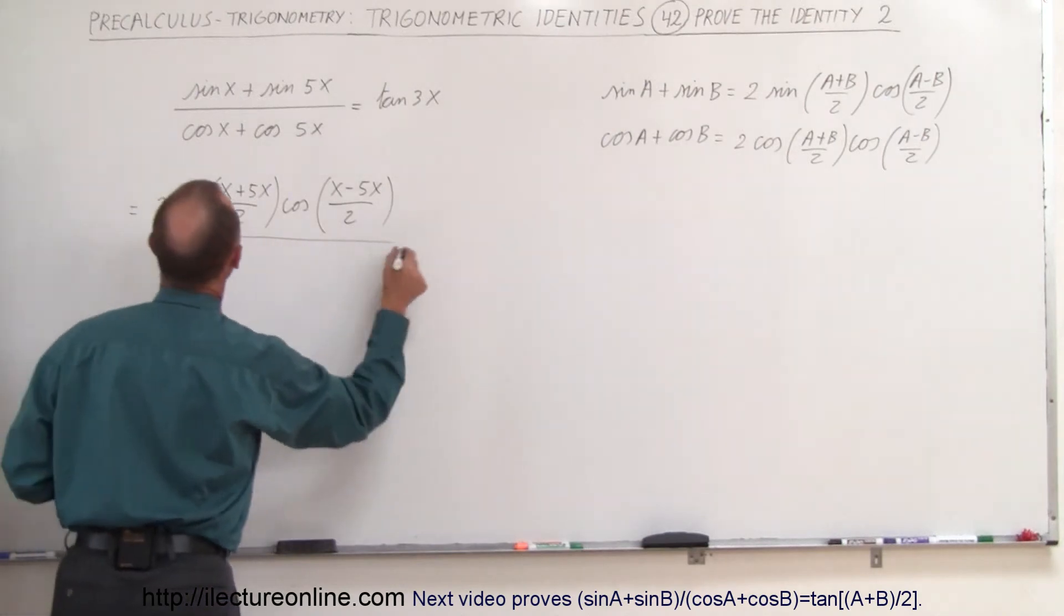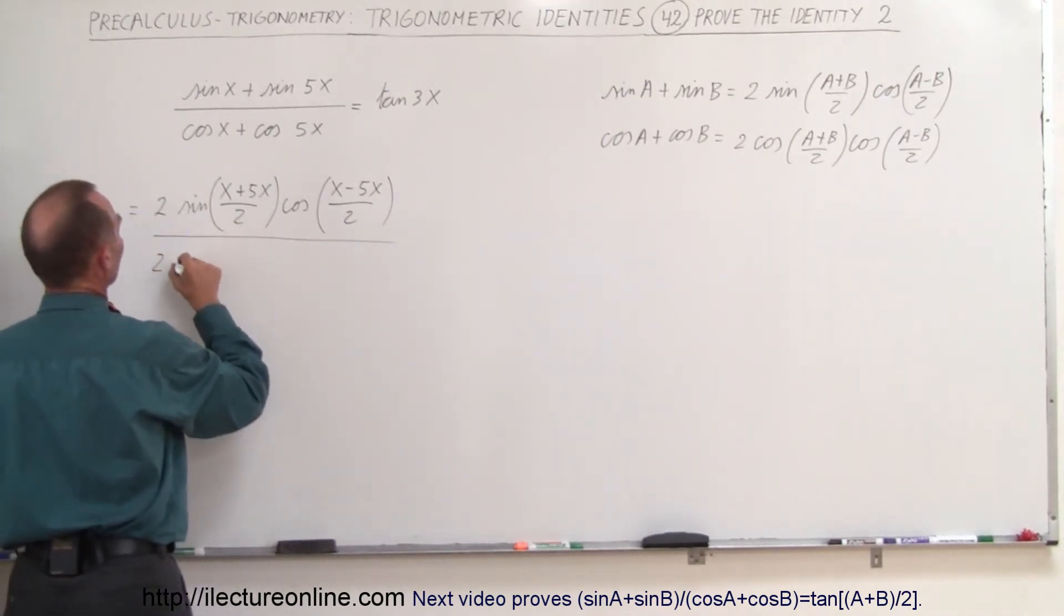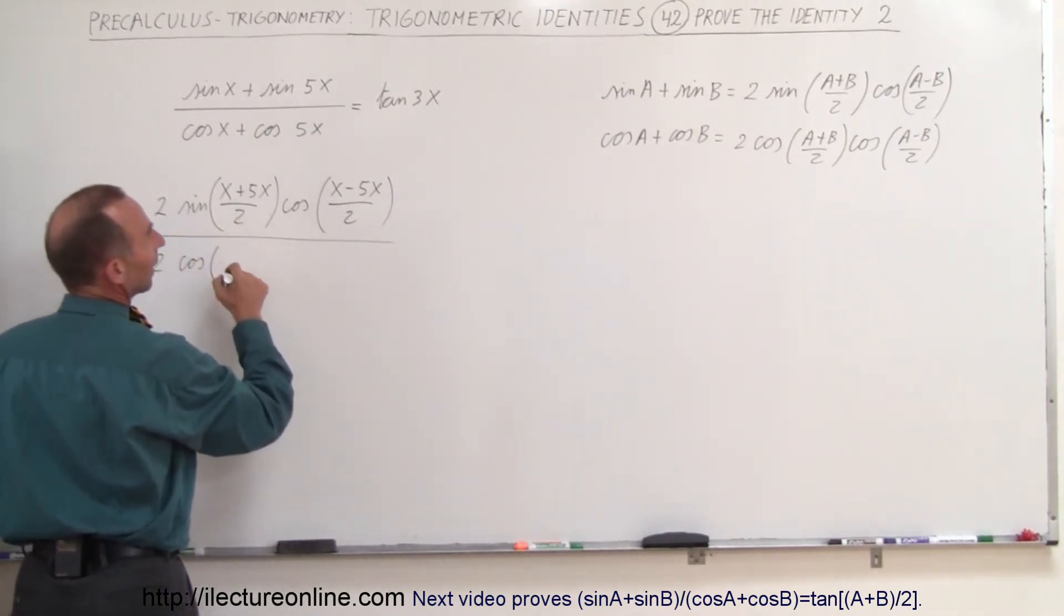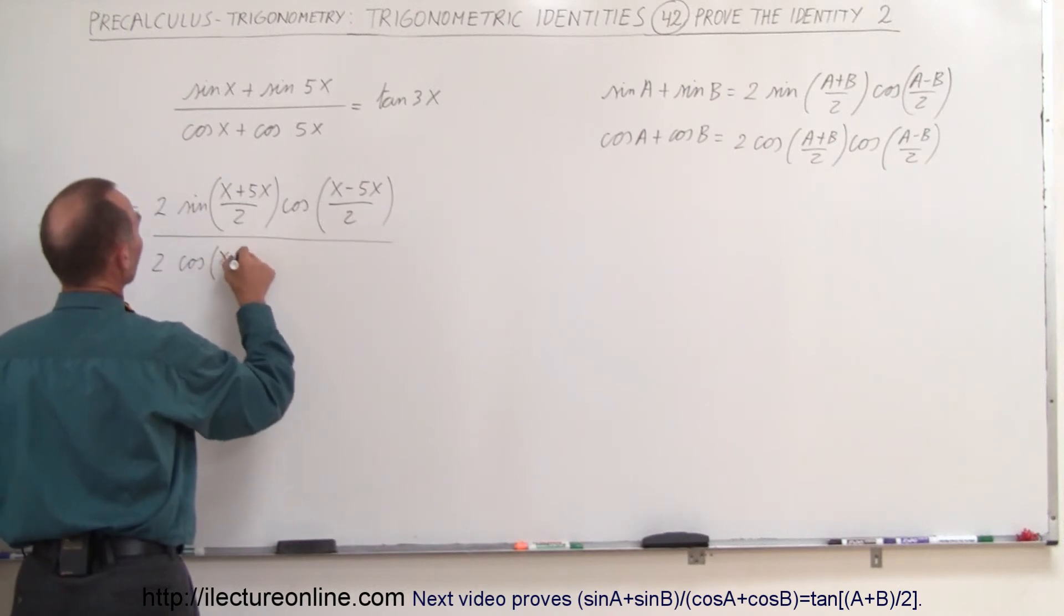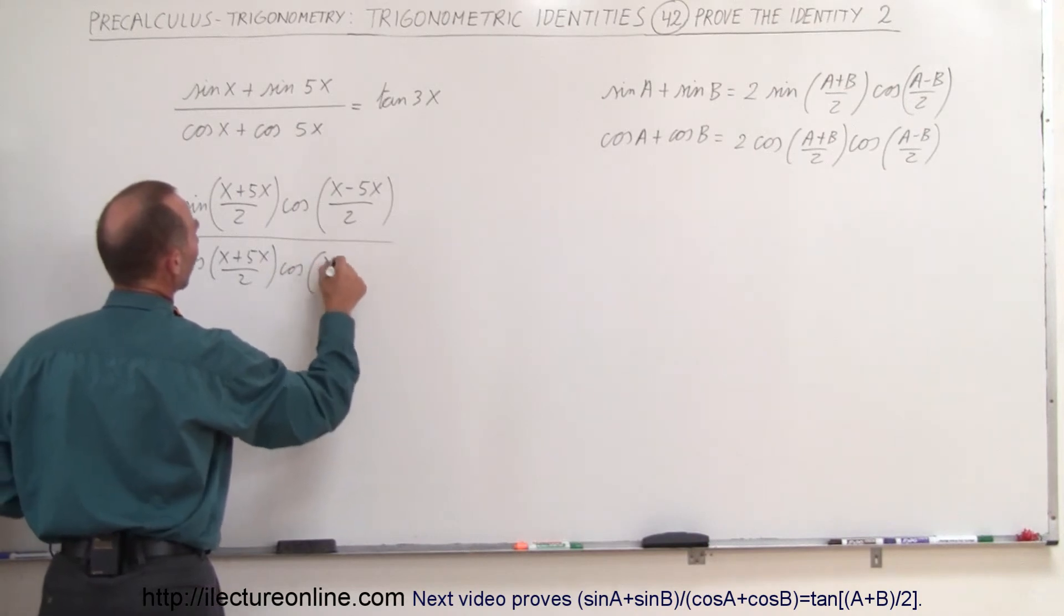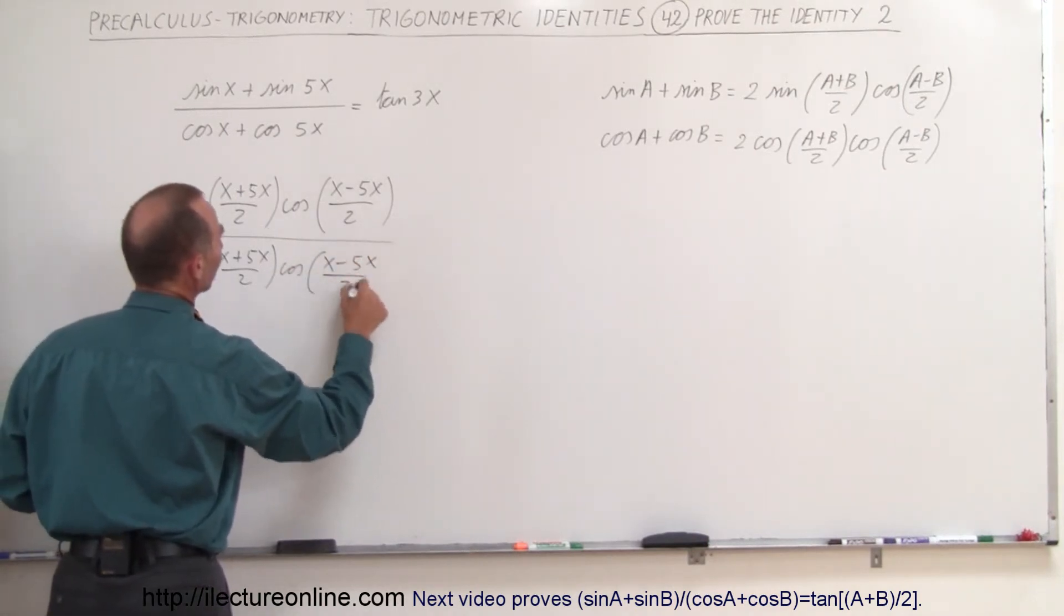And the whole thing is divided by 2 times the cosine of, and that would be A plus B would be x plus 5x divided by 2 times the cosine of x minus 5x divided by 2.